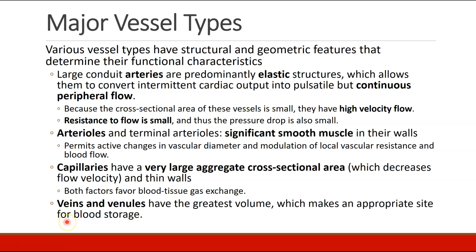The veins and venules allow return of blood back to the heart, and they have the greatest total volume, which makes them a good site for blood storage if the body needs to modulate the amount of intravascular volume.